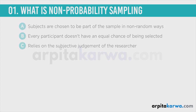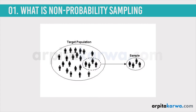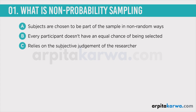Because of this there is a higher chance of sampling error. If you don't know what sampling error is, I would request you to go to my lecture on sampling and watch it again so that you are clear on what sampling error is. In case of non-probability sampling there is a higher chance of sampling error because every single individual does not have an equal chance of being selected as a sample.